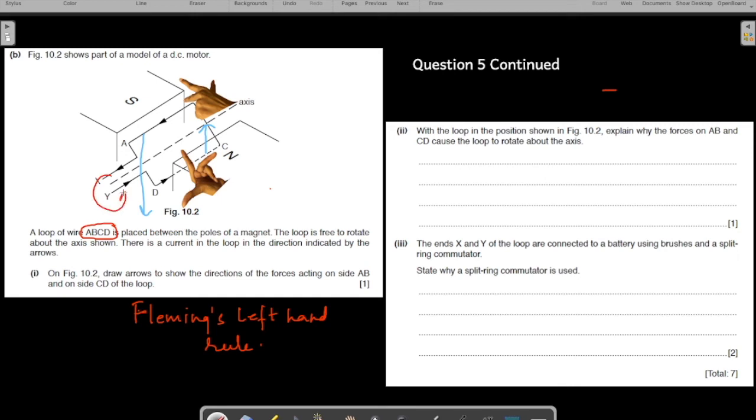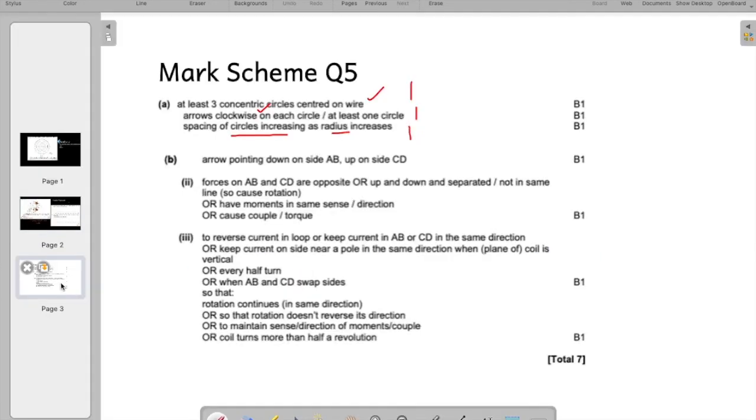Right? But the question is not asking you in what direction the coil is rotating. So, they are just asking you to mark the forces on the end AB and CD. It is a one mark question. And you have solved it. Let us tally if our answer is correct.